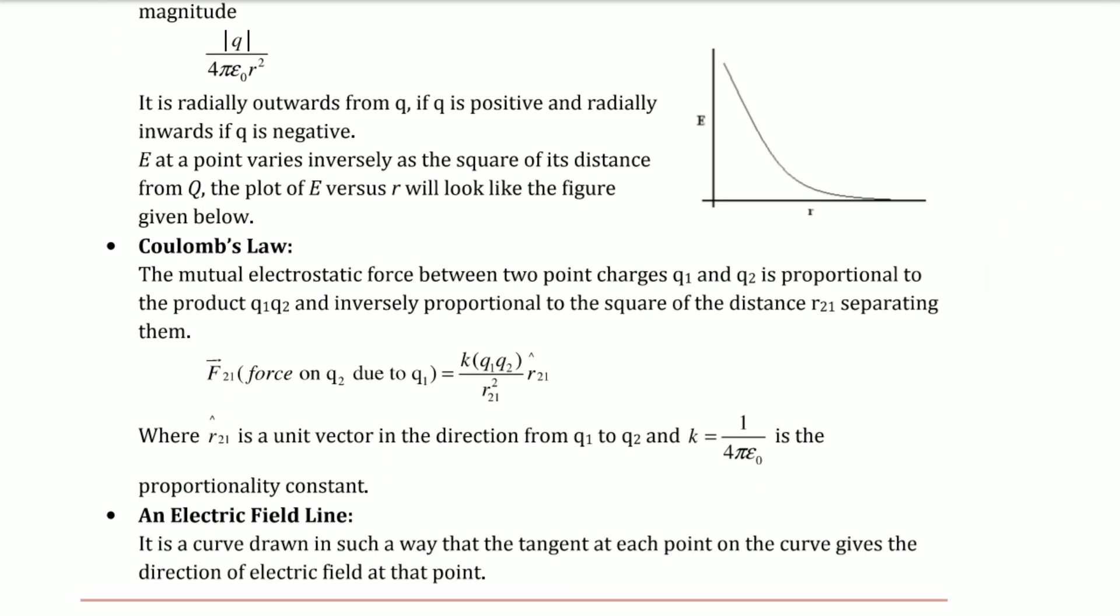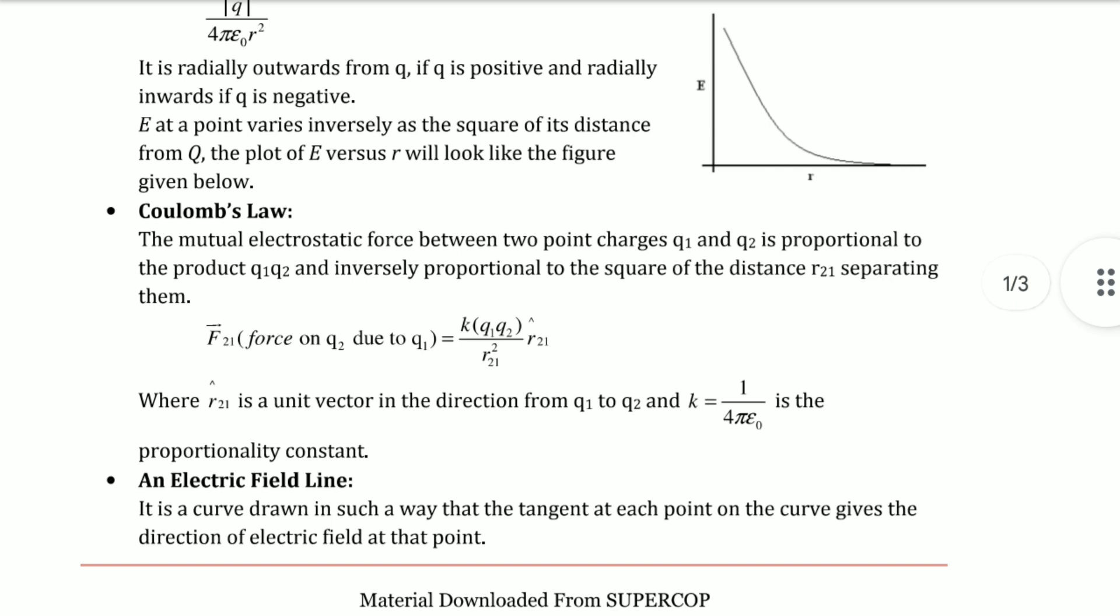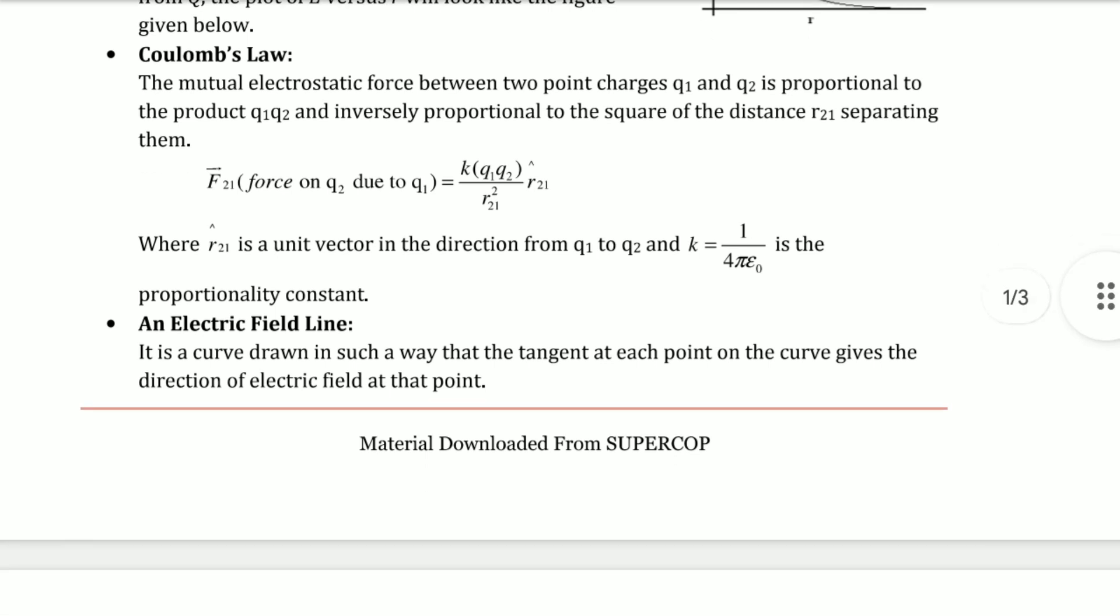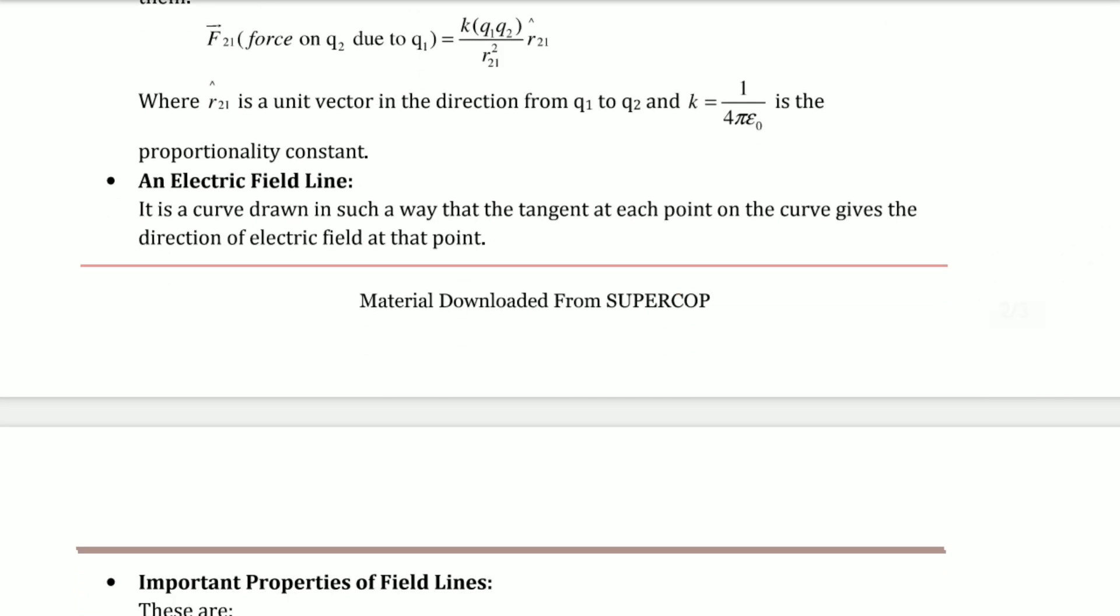Coulomb's Law: The mutual electrostatic force between two point charges q₁ and q₂ is proportional to the product q₁q₂ and inversely proportional to the square of distance between them. So F = kq₁q₂/r². In vector form, r̂ is multiplied. The value of k is 1/(4πε₀), the proportionality constant.